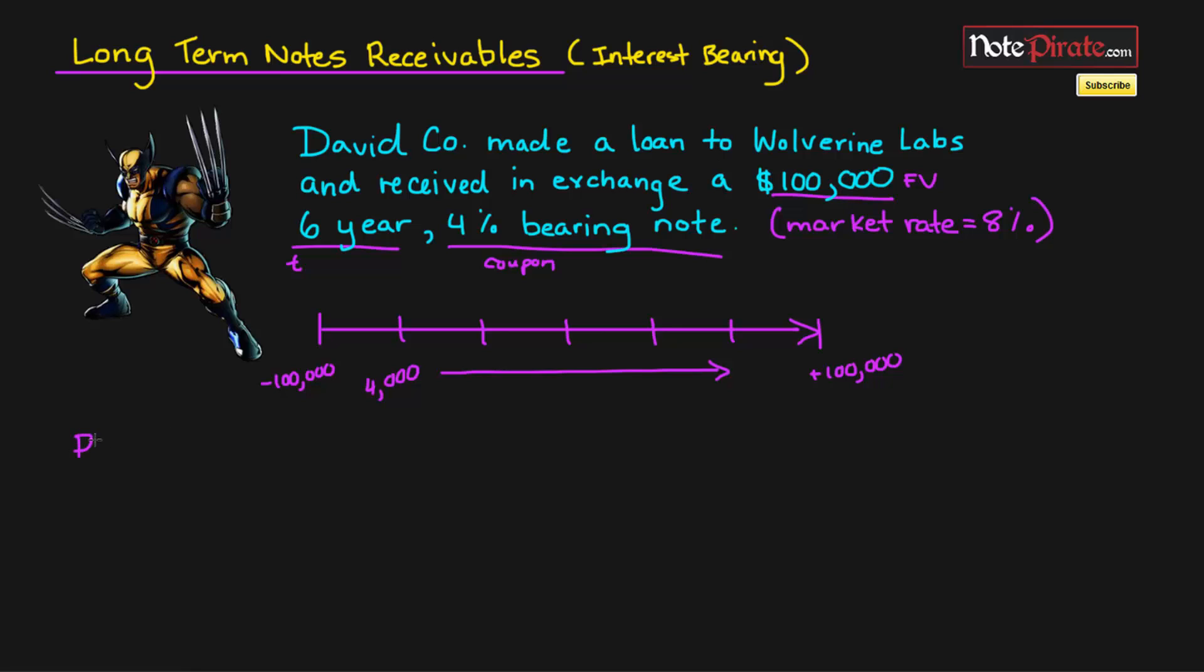And the present value of an annuity is going to equal the cash flow times 1 minus 1 divided by 1 plus R to the power of T divided by the market rate.